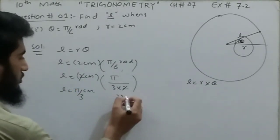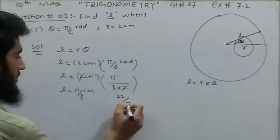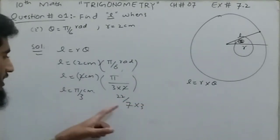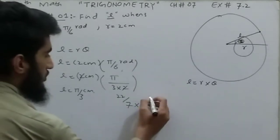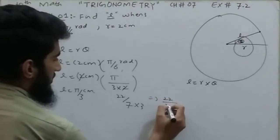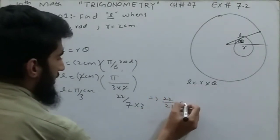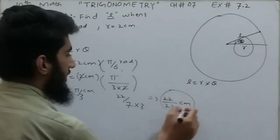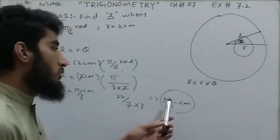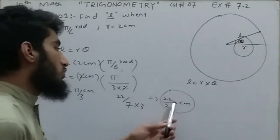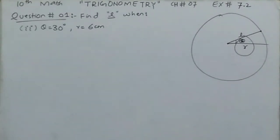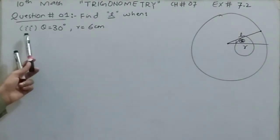Now the value of π is 22/7, so substituting: l = 22/7 × 1/3, and since 7 × 3 = 21, we get l = 22/21 centimeters. This is the required and desired length. You can also find the exact decimal value by dividing 22 by 21 with a calculator. Now move to the next part, part number two.